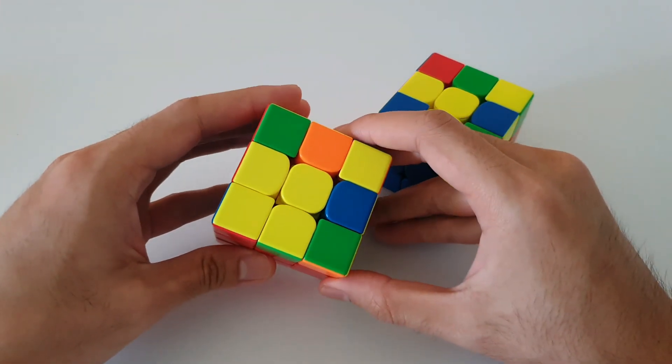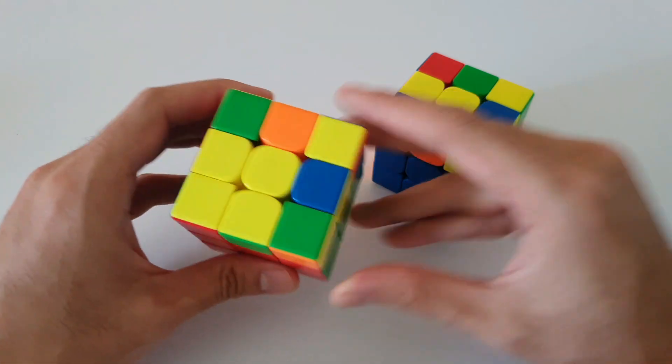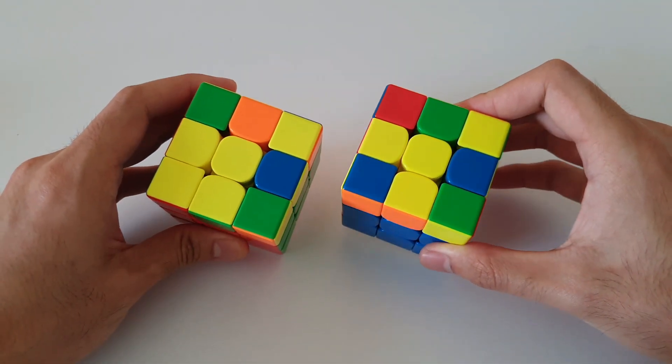This one is also a fish shaped case. So this corner does not have to be oriented, but in this case it is. But either way, both of these are fish shaped cases.